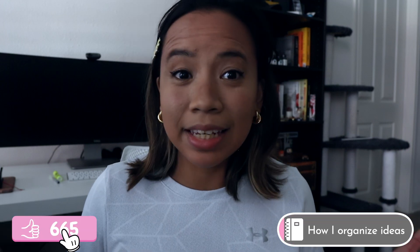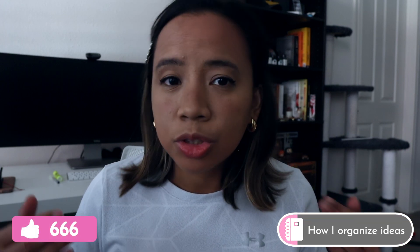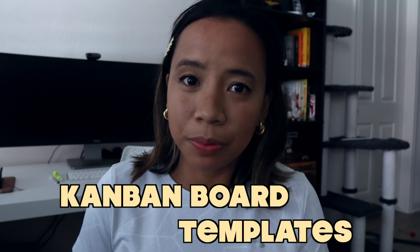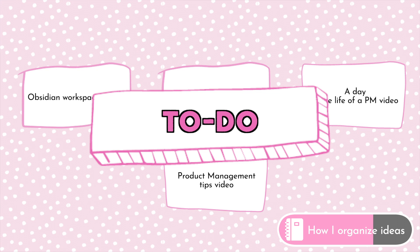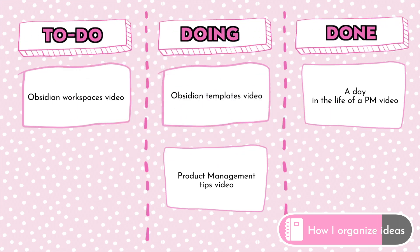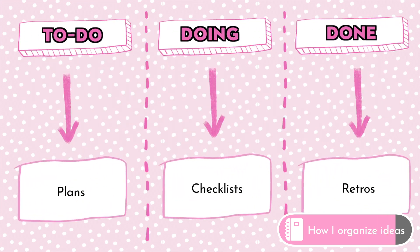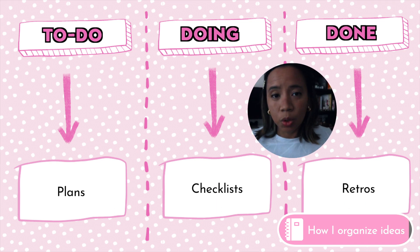A lot of my ideas actually come from my book notes. I like to read a lot and take notes on the things I'm reading — I actually have a video on how I do that, and these inspire some of the videos I make for this channel. While tags and book notes are really useful for gathering ideas, to turn all of these ideas into videos I have to be a lot more organized. This is where Obsidian's Kanban board and templates come in. The Kanban board shows where various items are in a process, with cards for work that needs to be done and columns for the different steps.